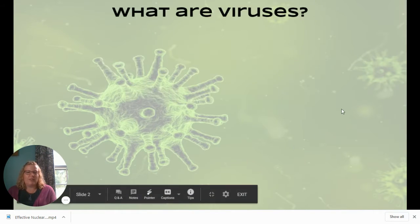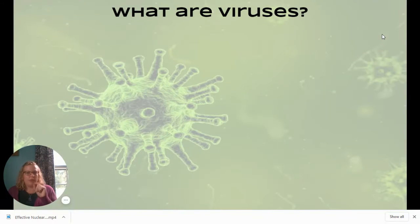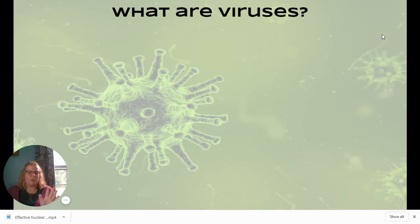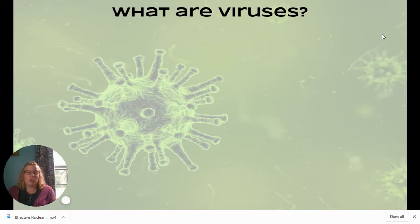Viruses and parasites are — parasites especially — a pretty small category of things that get you sick. Viruses are probably the biggest category of things that cause foodborne illnesses, but in terms of deaths they're pretty small. Bacteria get their own whole discussion, which will be happening later this week. We're going to talk about viruses first, and then we'll get to parasites.